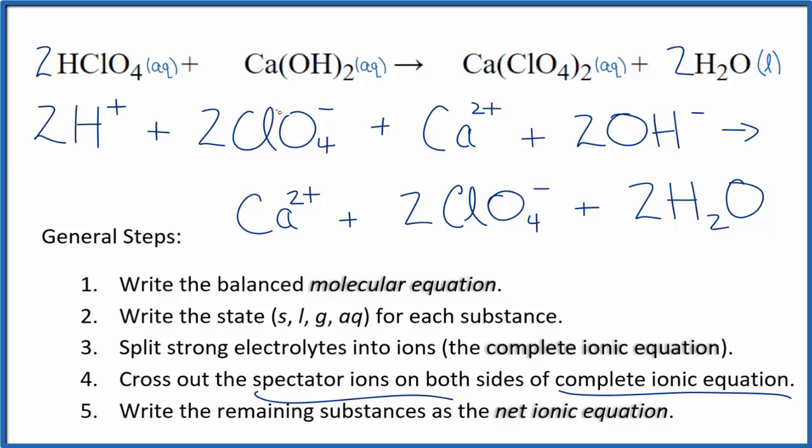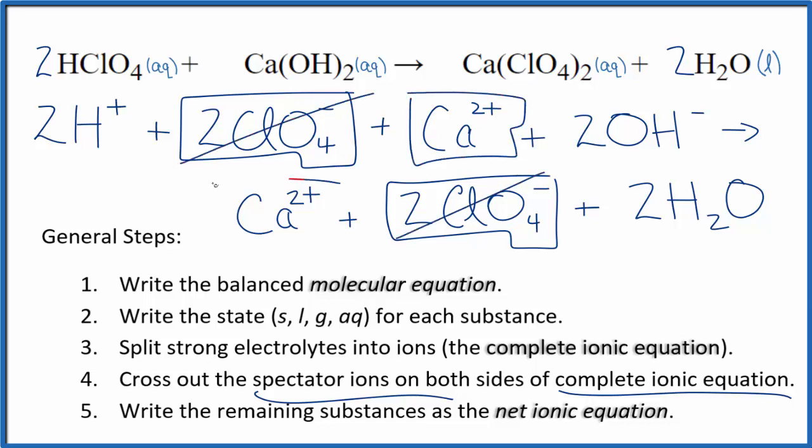In the reactants here, I can see I have two perchlorate ions. Again, two perchlorate ions in the products. These are spectator ions. We're going to cross those out. I have a calcium ion here and again in the products. Cross it out. What's left, that's the net ionic equation for HClO4 plus Ca(OH)2.